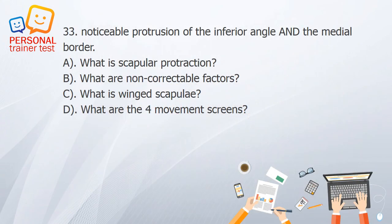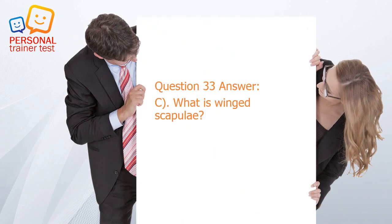Question 33. A. What is scapular protraction? B. What are non-correctable factors? C. What is winged scapula? D. What are the forearm movement screens? Answer: C. Winged scapula is a noticeable protrusion of the inferior angle and the medial border.